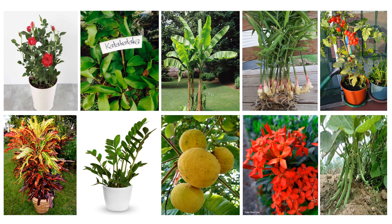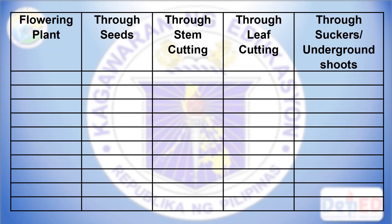Now, look closely at these flowering plants. Are you familiar with them? Okay, so this is the table that you're going to complete. We have the names of the flowering plants — write them in the first column. Then check if the flowering plants reproduce through seeds, through stem cutting, through leaf cutting, or through suckers or underground shoots.